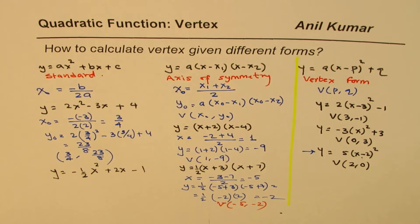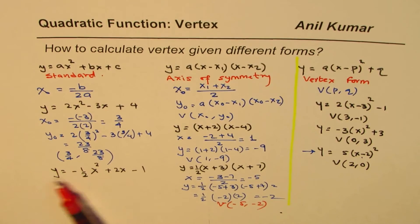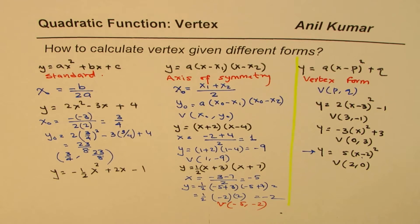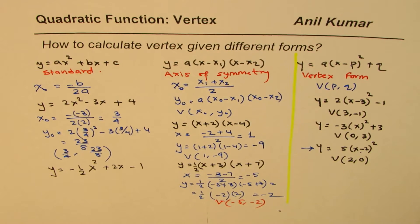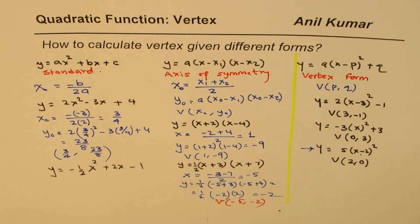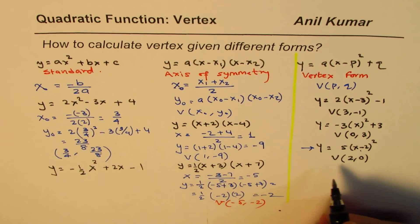Get your vertex from this particular equation. Find the x value using the formula minus b by 2a. Substitute here and then calculate y. Now, I'm Anil Kumar and I hope in short this tells you how to find vertex when a quadratic function's equation is given in any form.